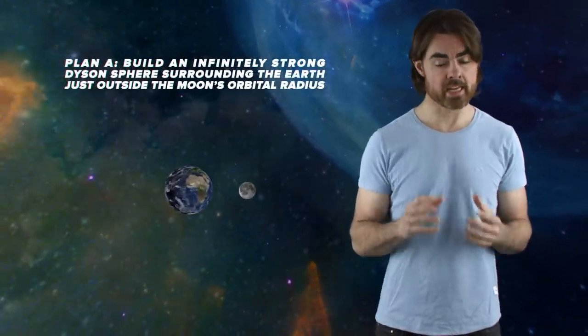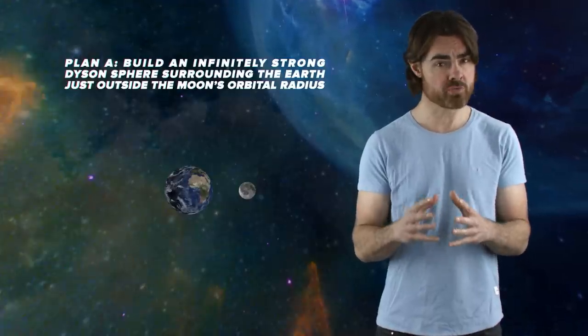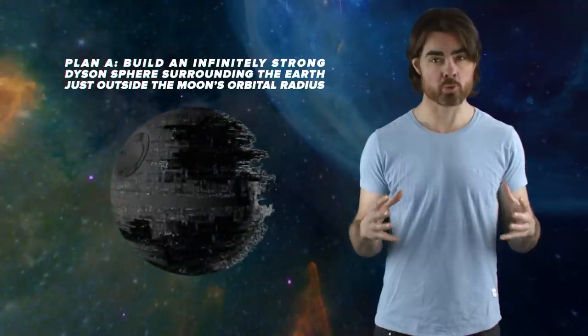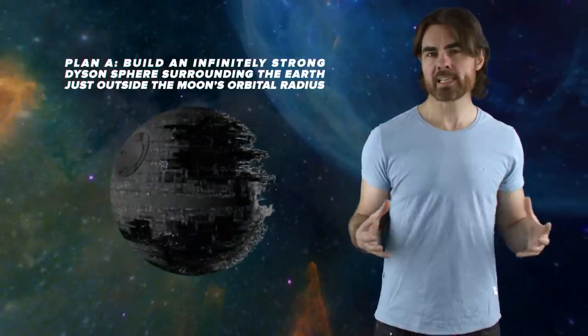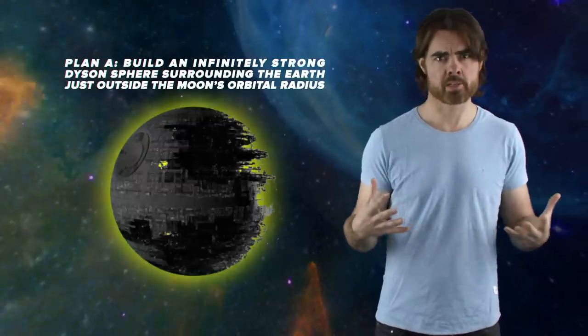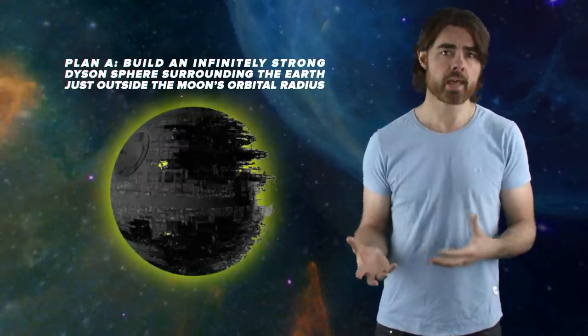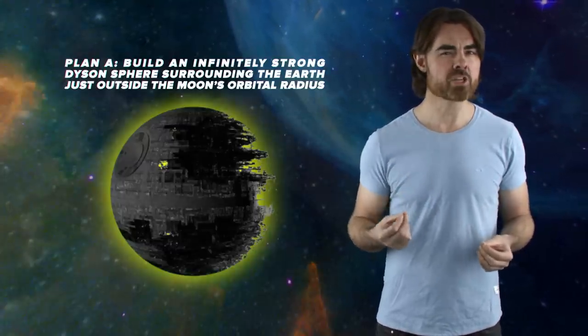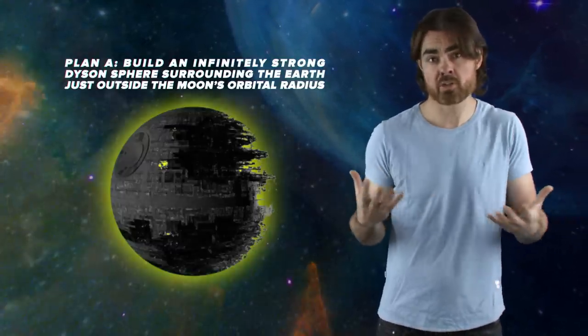Our own homeworld security agents discovered this plot, so there's a chance we can do something. Two competing plans are put forward. Plan A is to build an infinitely strong Dyson sphere surrounding the Earth just outside the moon's orbital radius. It would completely absorb the incoming pulse, storing it as a ridiculous amount of electrical energy and the accompanying increase in mass. Maybe that energy can then power a superweapon to fight the aliens?